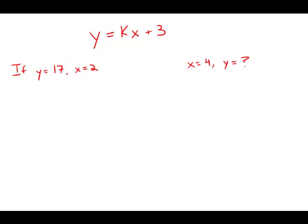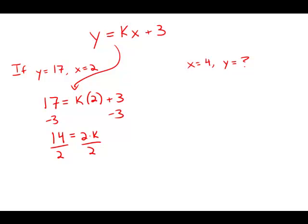So to solve this, we have to find that constant. I'm going to take this equation and plug in the numbers. y equals 17, x equals 2, then subtract 3 from both sides. 14 equals 2 times k, divide both sides by 2, and we get k equals 7.